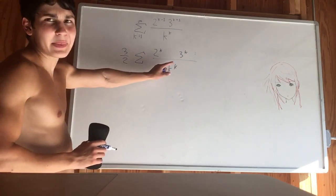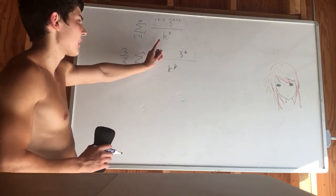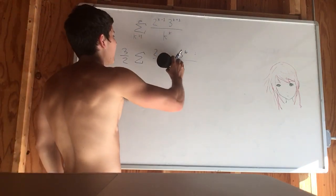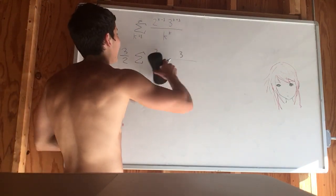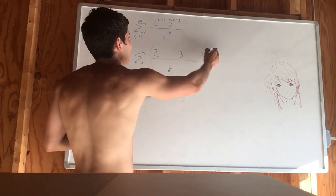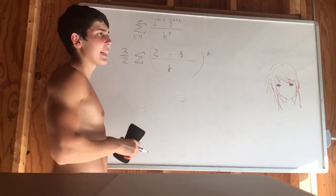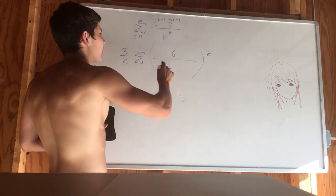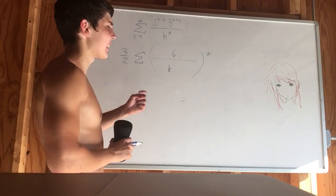Now everything here is being taken to the power of k. This is taken to the power of k and that's all taken to the power of k. So we can bring this out and have it like this. This is being multiplied, so that's going to give us 6. 6 over k to the power of k in the series.